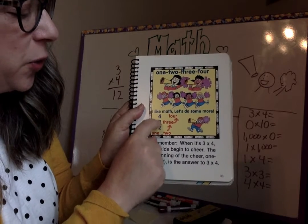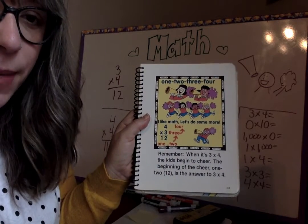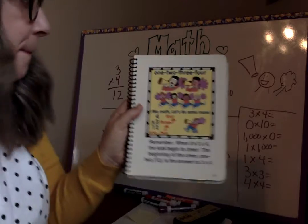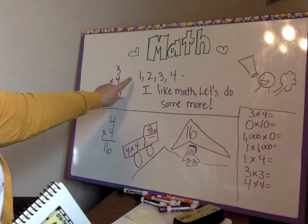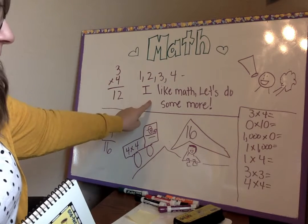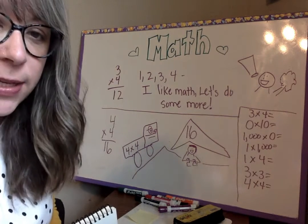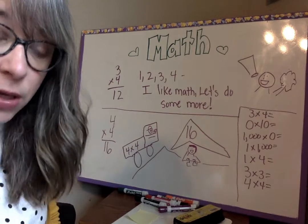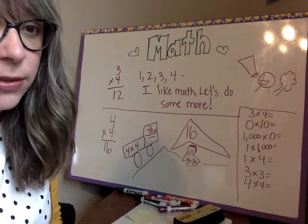So here's our cheer. One, two, three, four. I like math. Let's do some more. Three times four is twelve. Four times three is twelve.